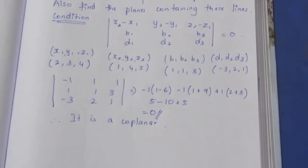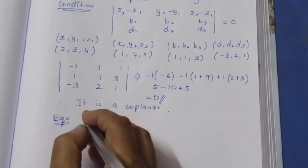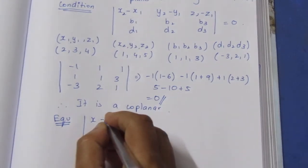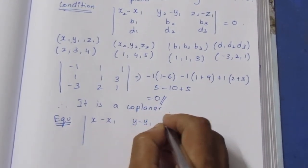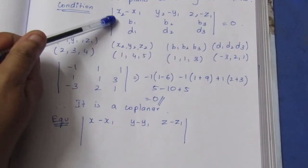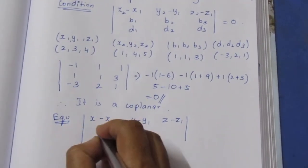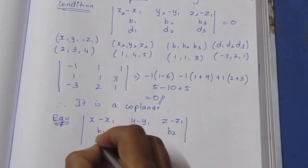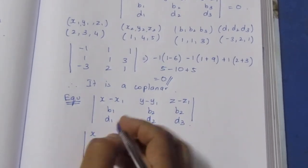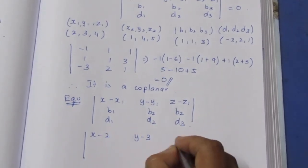Now that the lines are co-planar, we have to find the equation of the plane. Using the Cartesian formula: x-x1, y-y1, z-z1, with the point (2, 3, 4), so x-2, y-3, z-4, and the direction ratios b1, b2, b3 and d1, d2, d3 in the determinant.